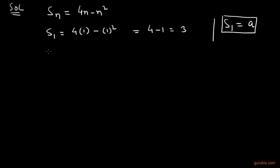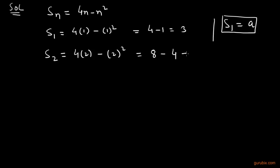Now we shall calculate the sum of the first two terms. This is S2. We put n = 2 in the formula: S2 = 4×2 - 2² = 8 - 4 = 4. So the sum of the first two terms is 4.